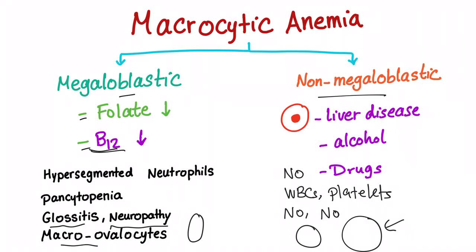What's the most common cause of megaloblastic? Folate is usually more common. Why? Your liver only stores folate for months, whereas it stores B12 for years — can be up to nine years, which is great.